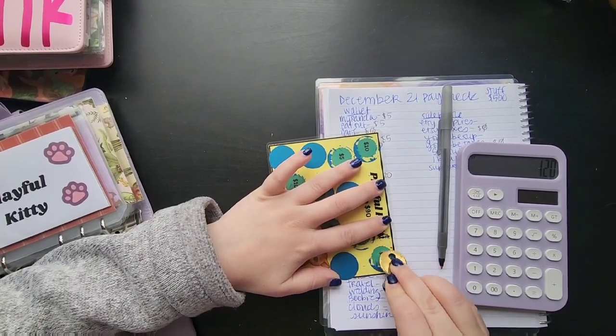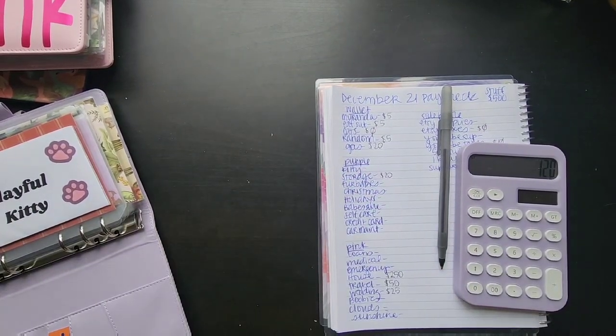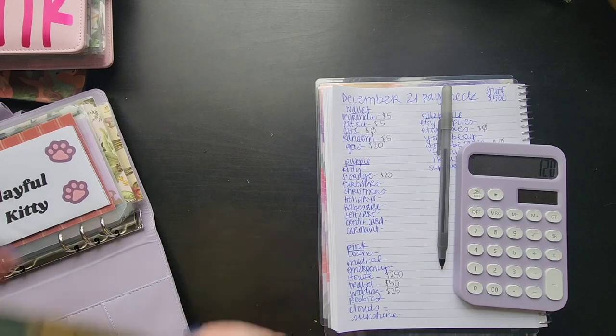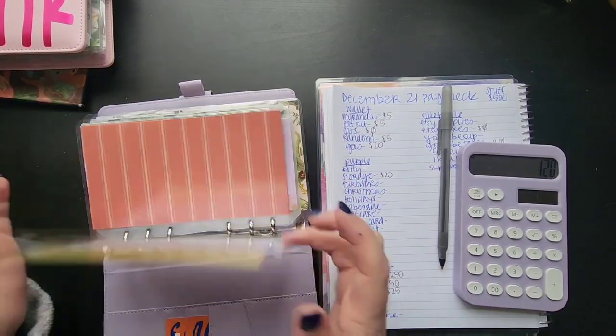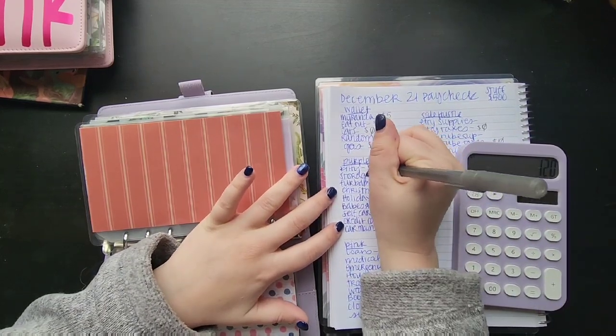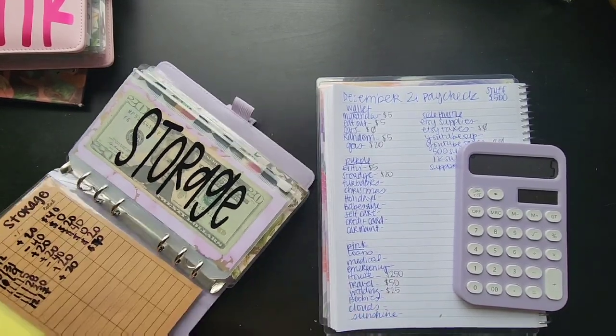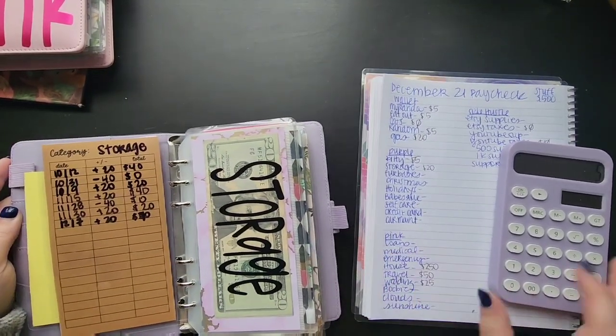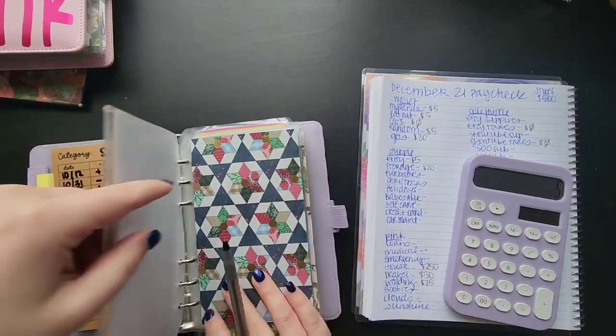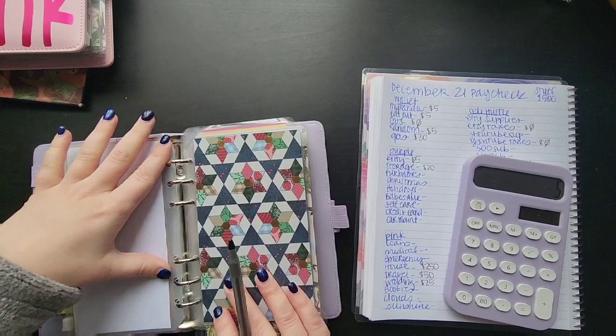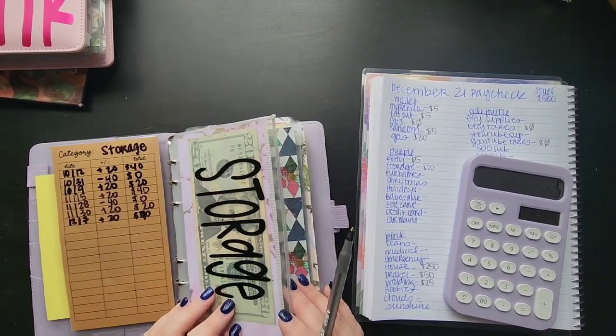And it is five dollars. So five dollars will be going in the playful kitty challenge this time. Stick this back in the envelope. So minus five. Next is storage, storage always gets 20 so that one's set. Why does it already have 40 in it? It must have been ahead somehow.